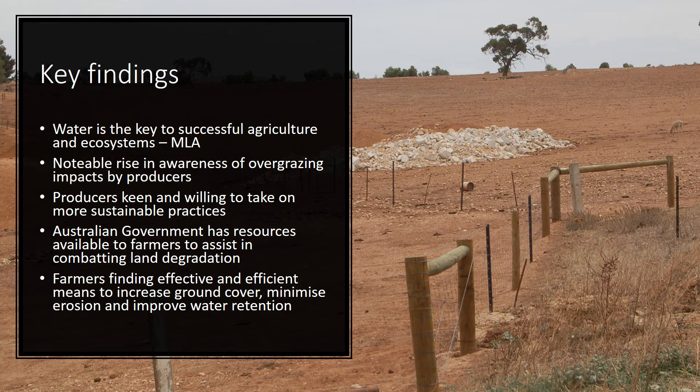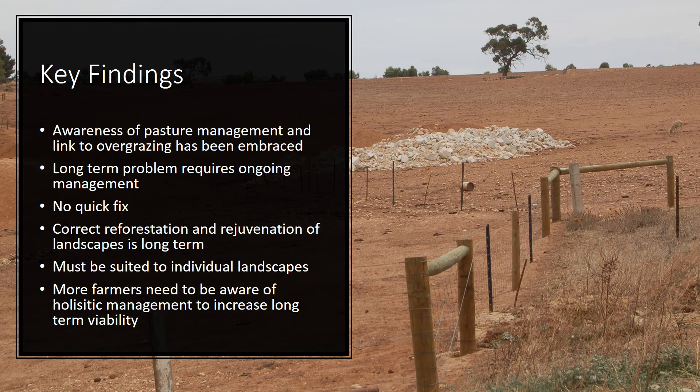The Australian Government is helping make this transition for farmers a lot easier by providing a number of resources to producers and graziers to assist in monitoring agricultural conditions such as pasture cover, nutrient availability and meteorological conditions. With such information at their fingertips, farmers are finding effective and efficient ways to reduce erosion, leading to higher water retention levels and therefore beginning to turn around the current water loss situation that so affects the continent.